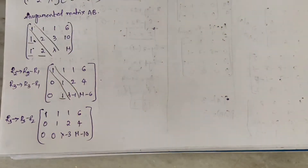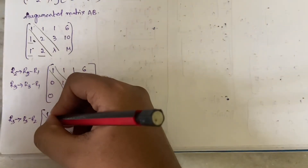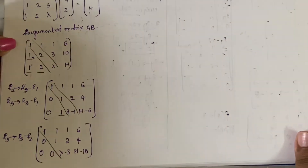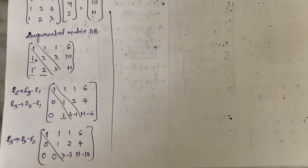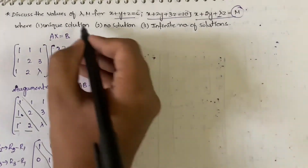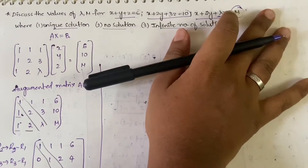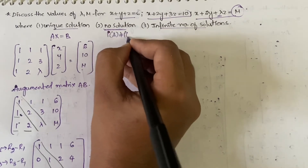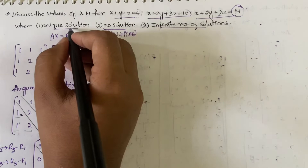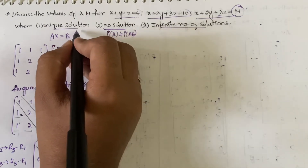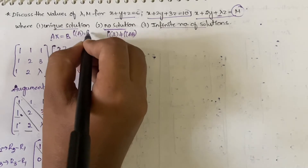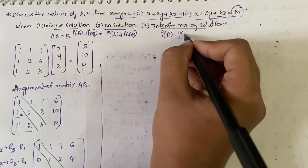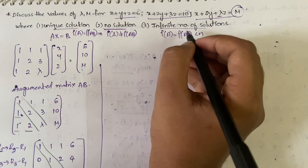Since all elements below the diagonal are zero, we stop the echelon process. Now we refer back to the conditions: no solution means rank(A) ≠ rank([A|b]); unique solution means rank(A) = rank([A|b]) = n; and infinite number of solutions means rank(A) = rank([A|b]) < n.